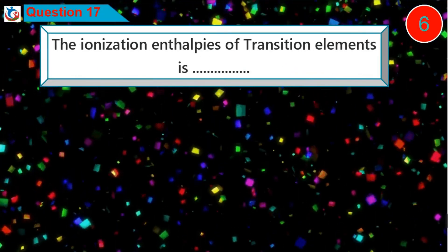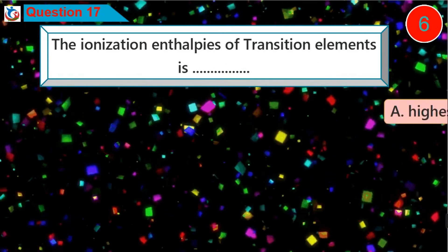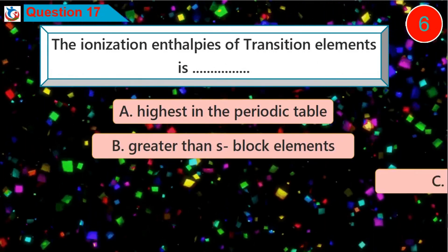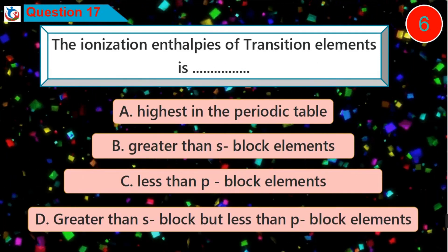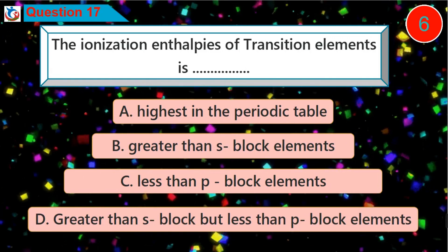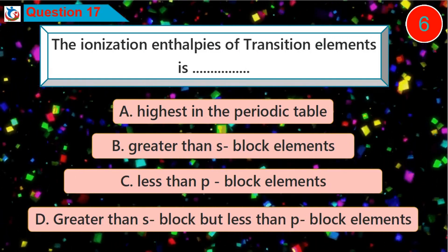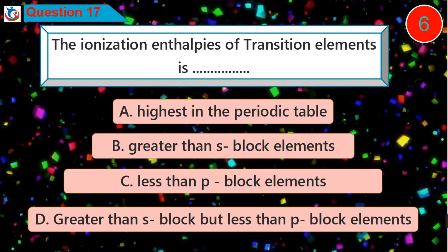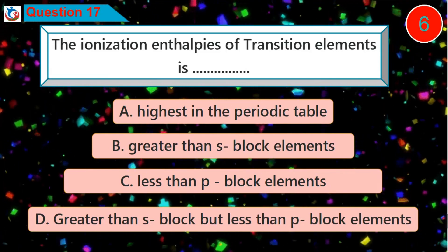Question 17: The ionization enthalpy of transition elements is — A. Highest in the periodic table, B. Greater than s-block elements, C. Less than p-block elements, D. Greater than s-block but less than p-block elements.